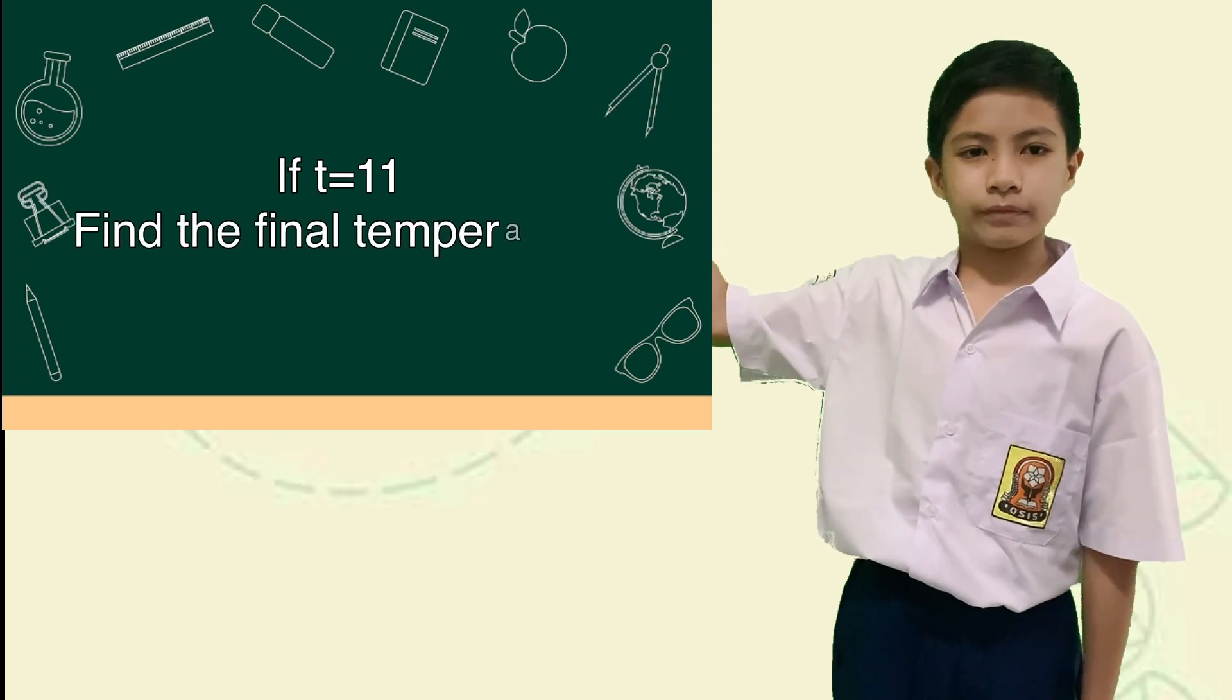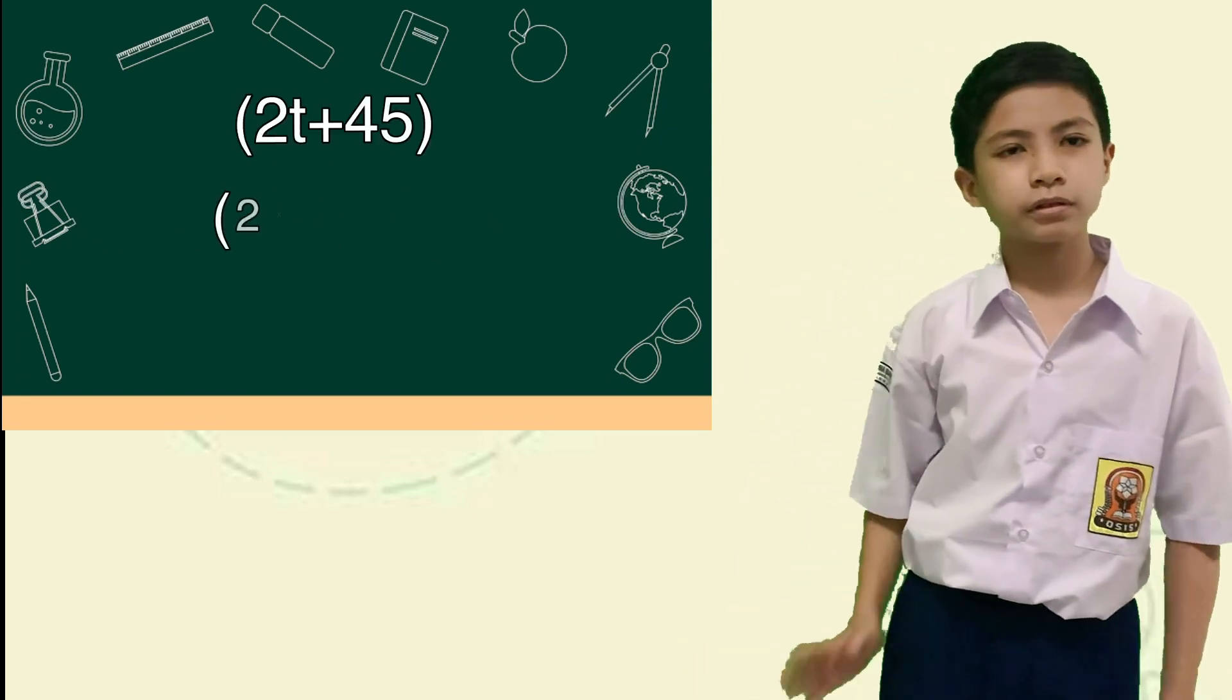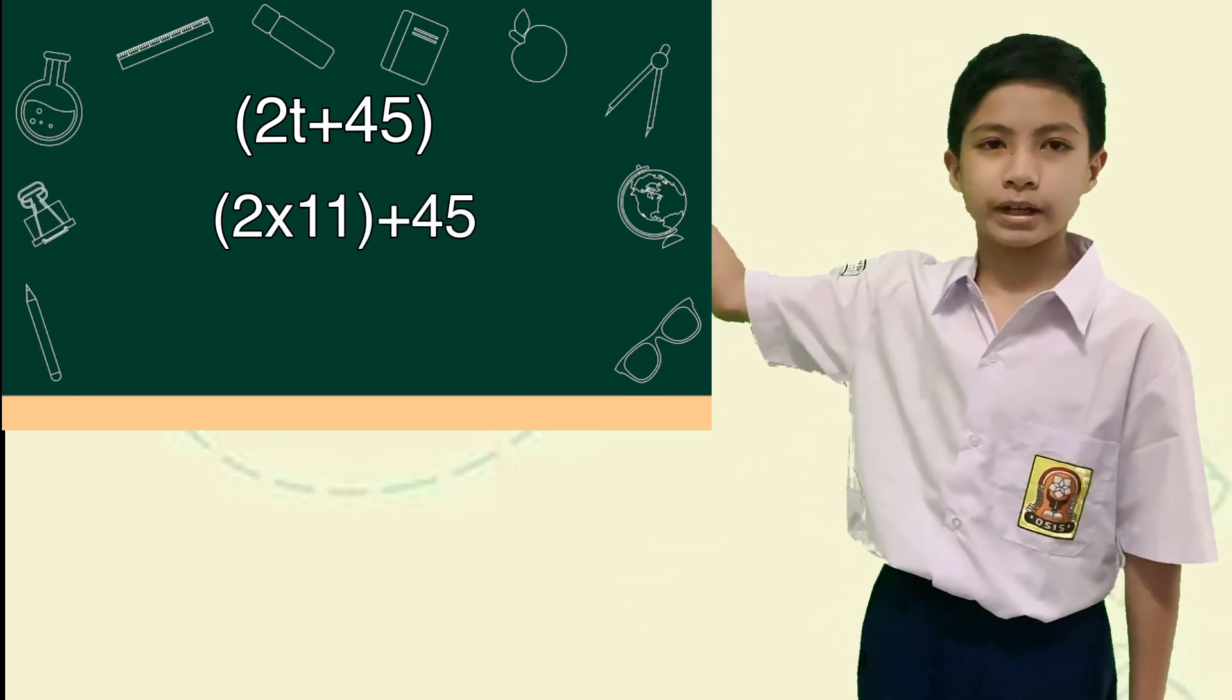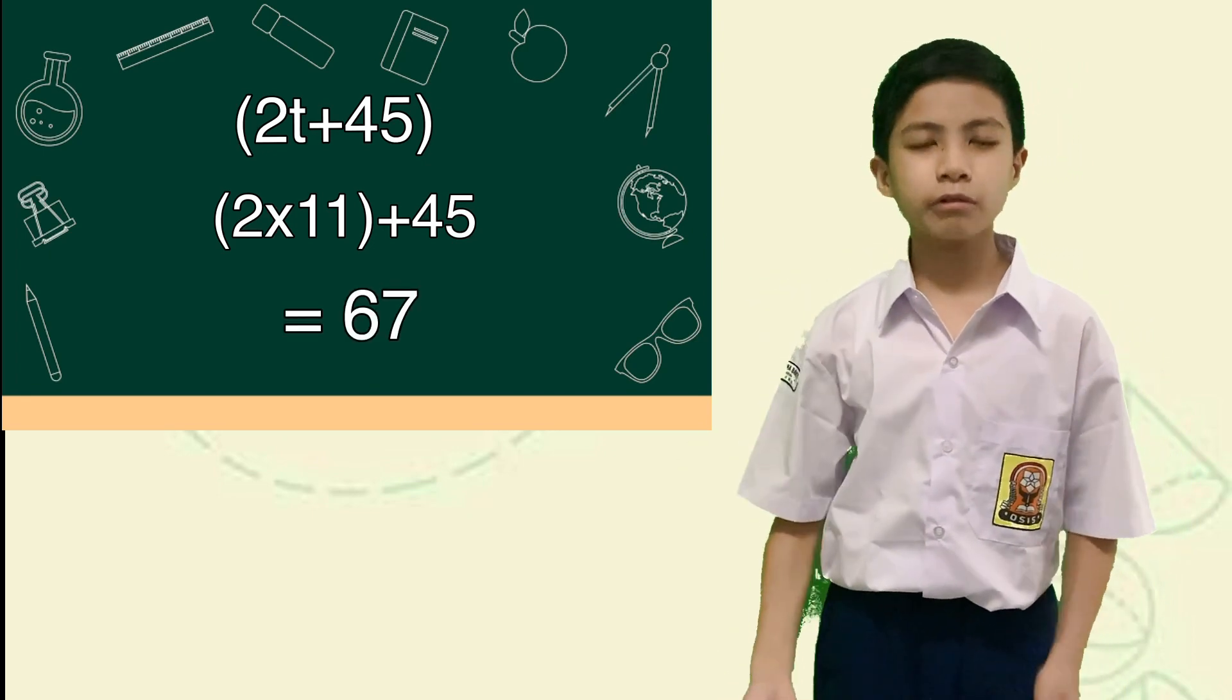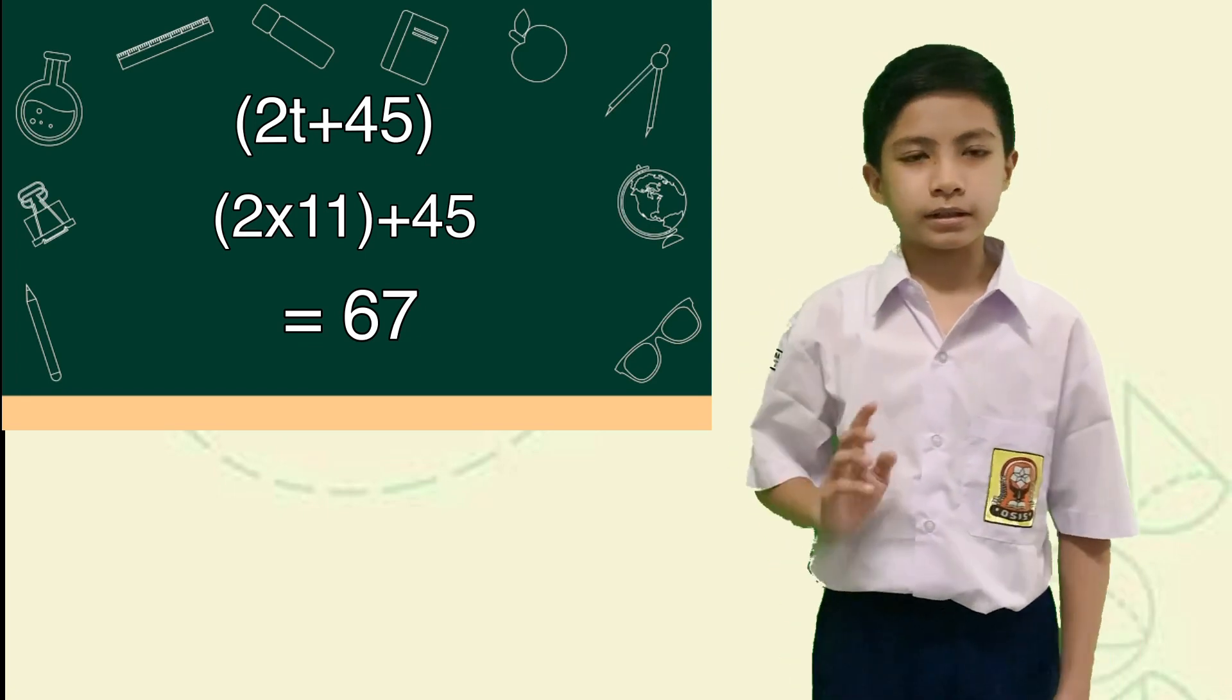For question B, if T is 11, find the final temperature. So, 2 times 11 equals 22, and then add by 45 equals 67 degrees Celsius. So, the final temperature is 67 degrees Celsius.